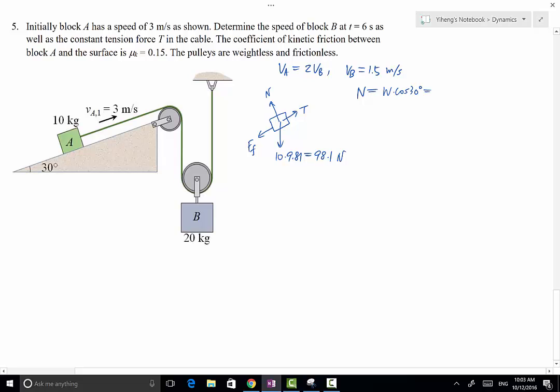So that is a quick equilibrium analysis along the Y' direction. Therefore the frictional force equals mu K times N, which is going to be 0.15 times normal force, that's 12.74 newton. T is unknown.